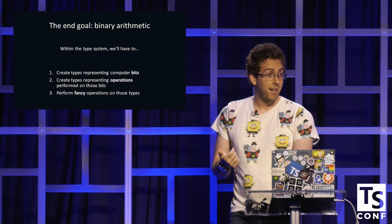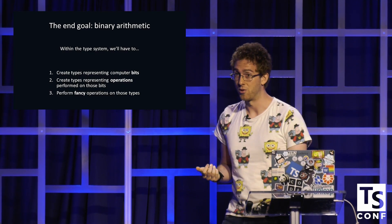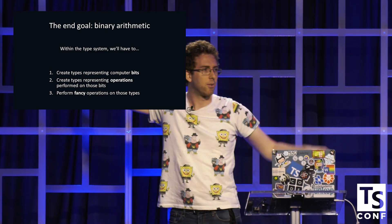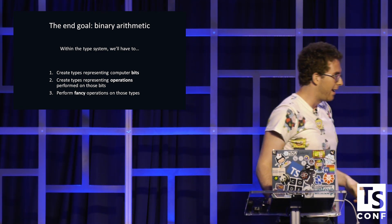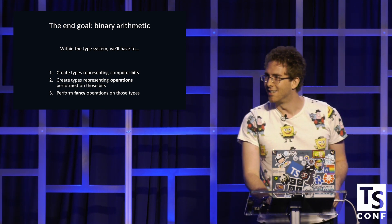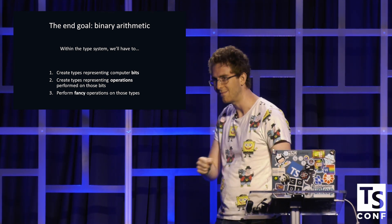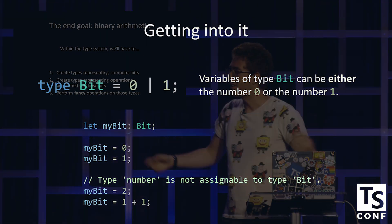Here's what we're actually going to do today. We're going to declare a bunch of types in order to create binary arithmetic in the type system. Within the type system, that involves three things. We're going to create types representing computer bits, 1 or 0. We're going to create types that do some operations on those bits. And then we're going to get to some fancy operations on those bits towards the end. Type bit equals 0 or 1.